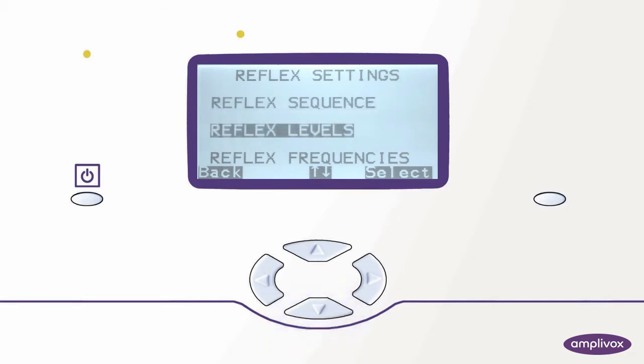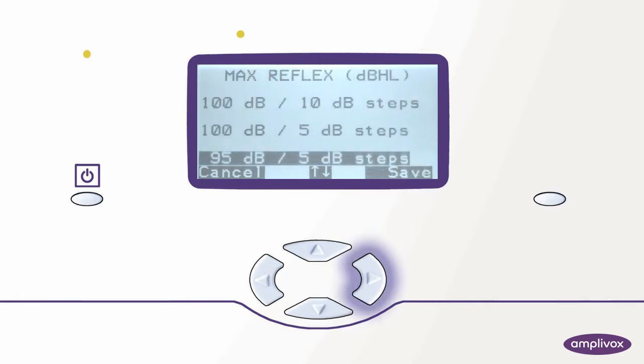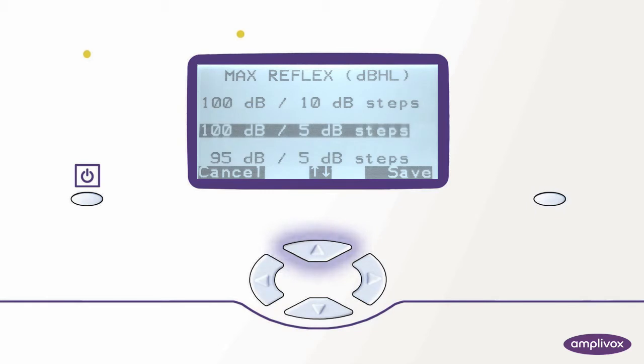The next step is to define the reflex levels at which we test. As we only test ipsilateral we press the right key again. We can see our current test setting is set to 95 dB. We would prefer to test up to 100 dB in 5 dB steps so we select the up key to highlight our preferred setting and save.